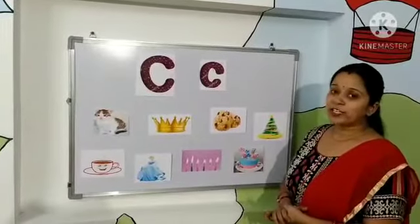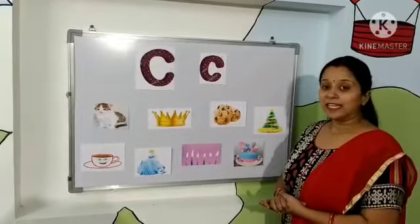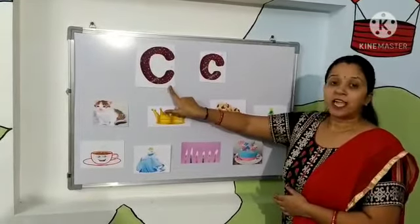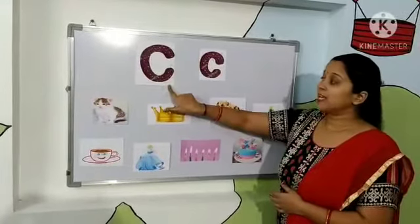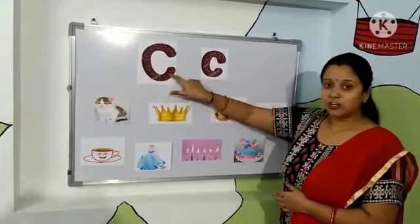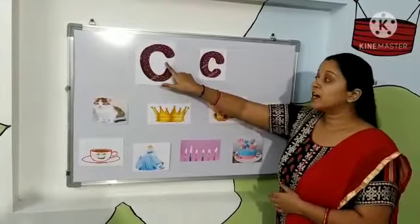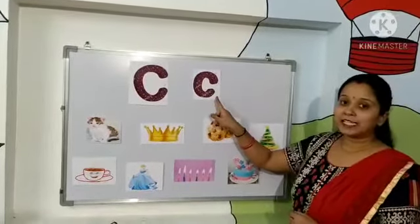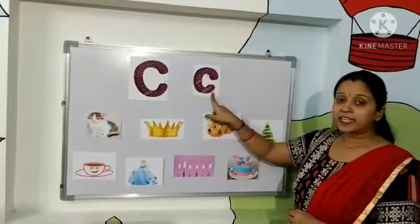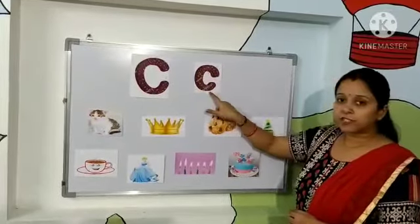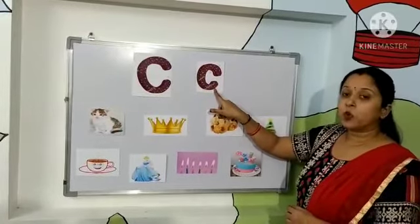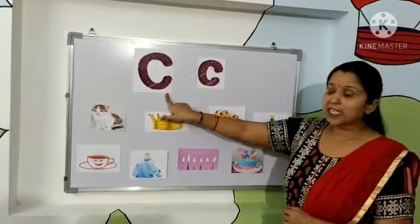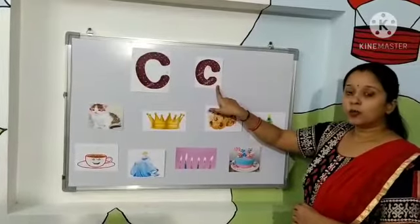Good morning power kids! We already know letter C — this is an uppercase letter C. How do we write letter C? It is a curve which is open from the right side. Today we will introduce a lowercase letter C. This is also in a curve shape and it is open from the right side. So this is an uppercase letter C and this is a lowercase letter C.